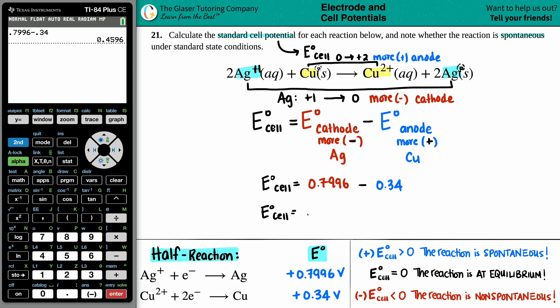If we do take into consideration sig figs, since I'm only going out to the hundredths place, I got to keep it to the hundredths. So 0.46, if we want to keep it that way. And that's the first part.